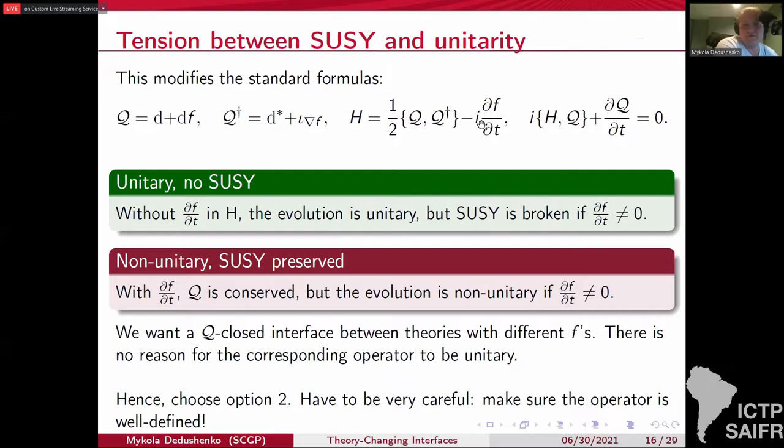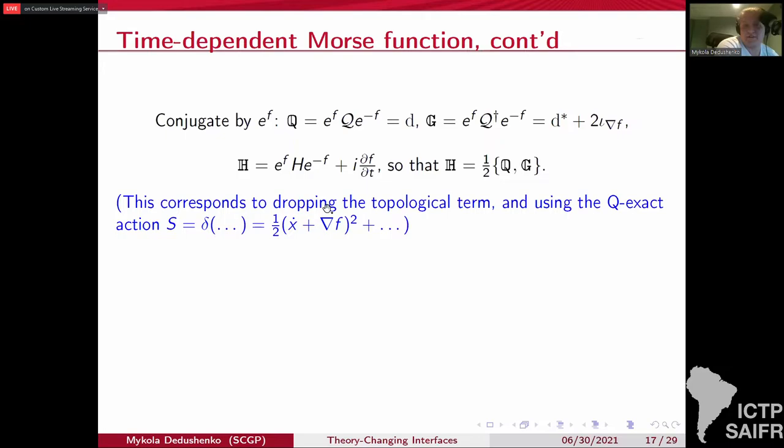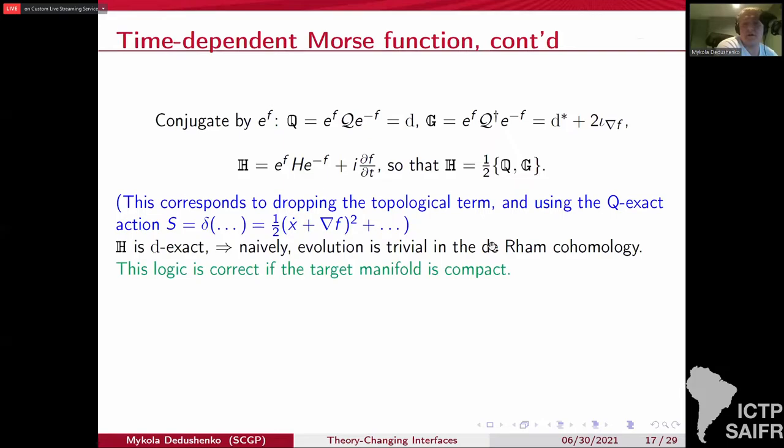But we have to be careful because now with this non-unitary evolution, you might end up exiting the Hilbert space and getting some unnormalizable states. It is actually convenient to conjugate by e^{-F} such that the differential is just D. And now the Hamiltonian, because of the way it transforms under this conjugation, becomes D exact. This conjugation simply corresponds to dropping the topological term. So the action is Q exact and it's just the square of the gradient trajectory equation plus some superpartners.